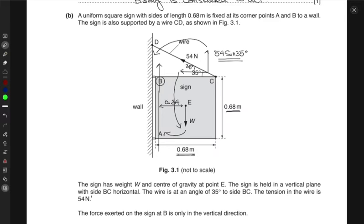Which gives you 54 sine 35, this one, multiplied by its distance 0.68, this one, so you multiply 0.68, and then its cosine component which is 54, the horizontal component, cos 35.